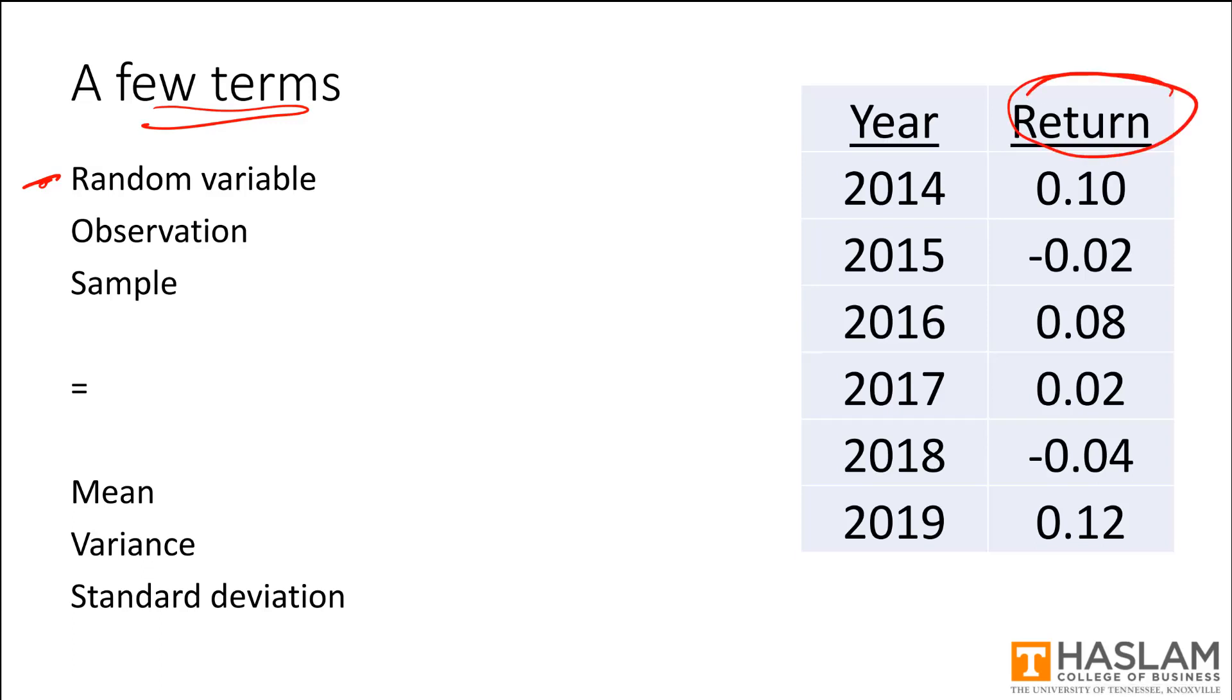We don't know what a stock's return will be in any given year. So it's a random variable, and then each year we see the return, so we see the outcome of that experiment.